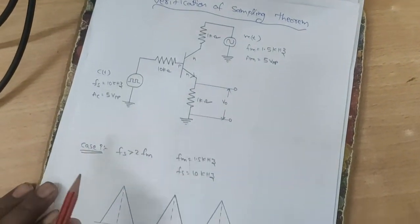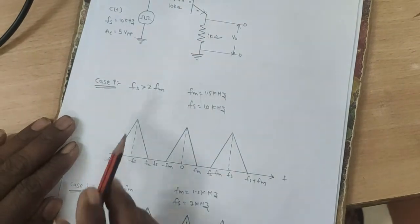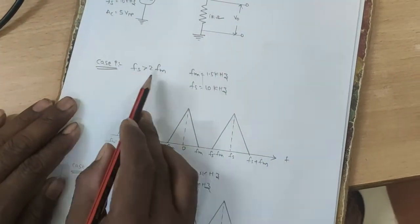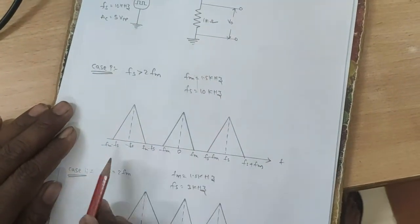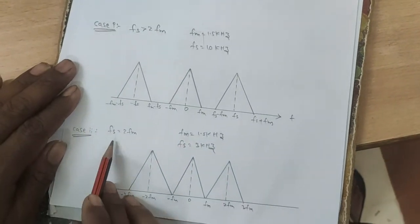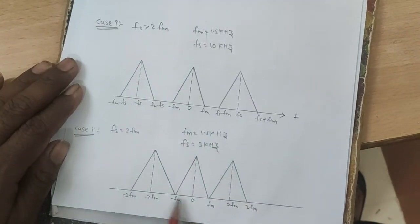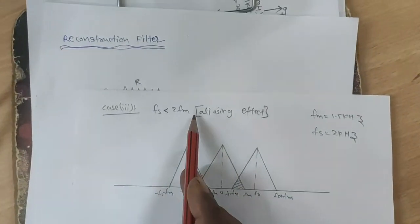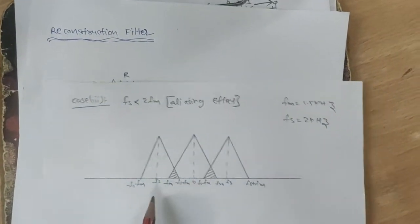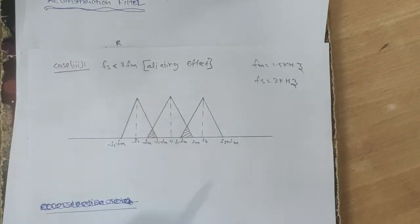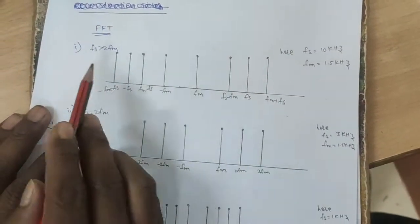We verify three conditions: first, Fs greater than 2Fm — this is the spectrum waveform. Second, Fs equal to 2Fm — the spectrum waveform looks like this. Third, Fs less than 2Fm — aliasing occurs, and this is the corresponding spectrum waveform, also observed on the FFT.